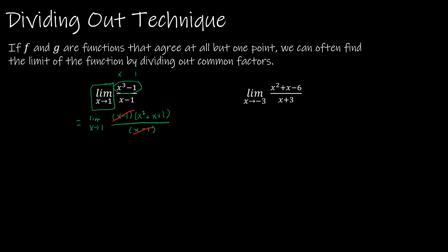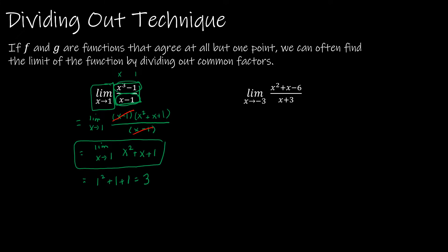I can cancel the x minus 1 factors. The limit as x approaches 1 of x squared plus x plus 1 is the same as the limit of the original function. Now I can do direct substitution: plugging in 1 gives 1 squared plus 1 plus 1, which is 3. If you were to graph them, the original function would have a hole at x equals 1, whereas the simplified function would not — they're the same function except at that one point.